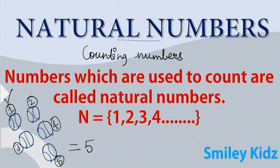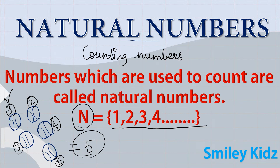We started our counting from one, then said one, two, three, four, five — there are five balls. The numbers which are used to count are called natural numbers. They start from one and go on until infinity. Natural numbers are denoted by the letter N.